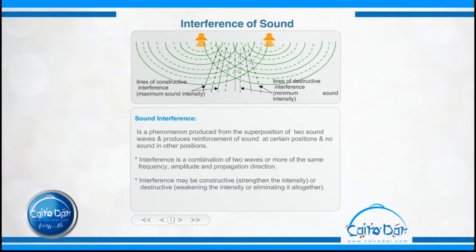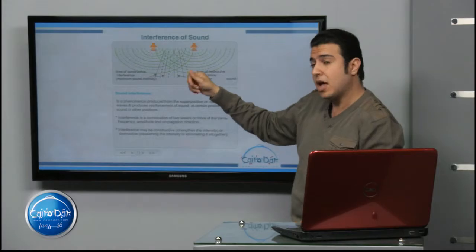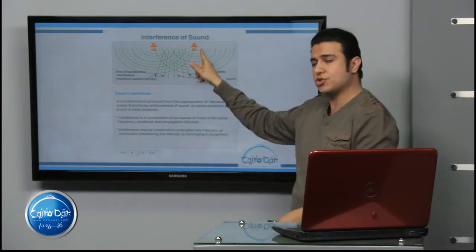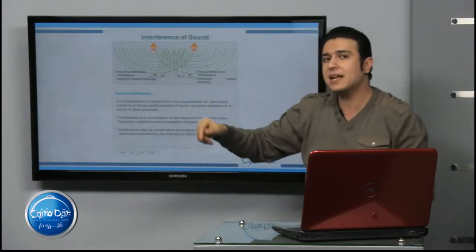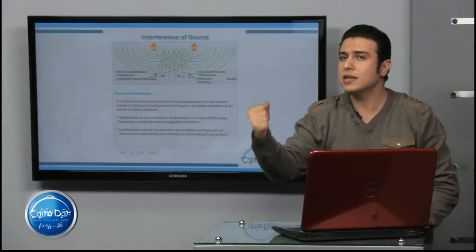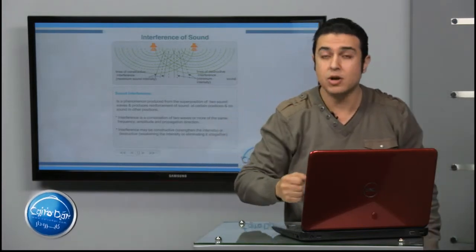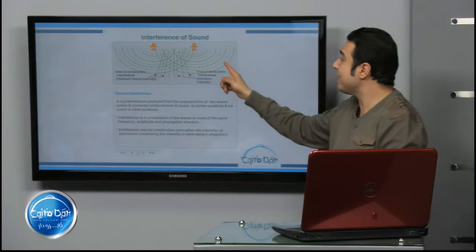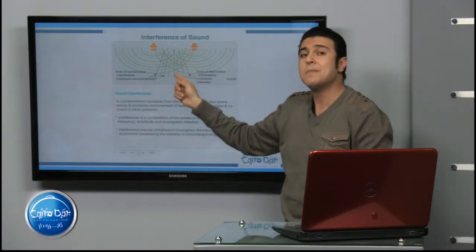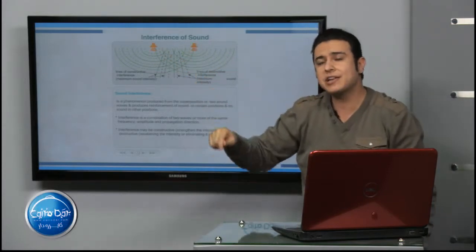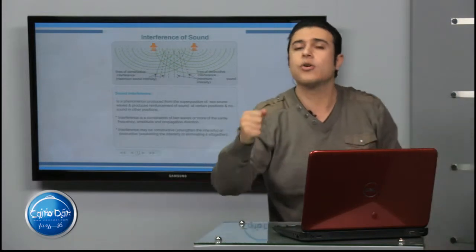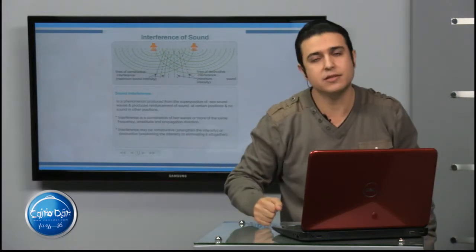When a compression from the first source meets a compression from the second source, it is constructive interference. Also, when a rarefaction from the first source meets a rarefaction from the second source, it is also constructive interference.